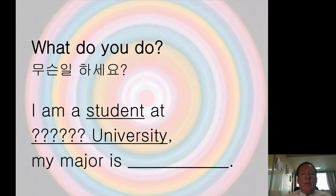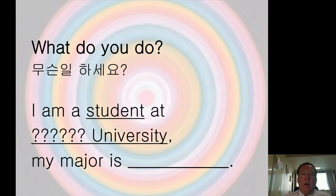Let's practice: 'What do you do?' Answer: 'I'm a student at Dongnam Health University. My major is nursing.' Or: 'I'm a student at Dongnam Health University. My major is occupational therapy.' Or: 'I'm a student at Dongnam Health University. My major is air tourism.' So 'What do you do?' is very important.